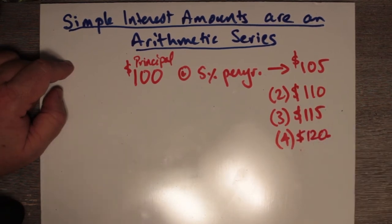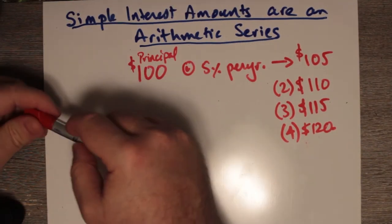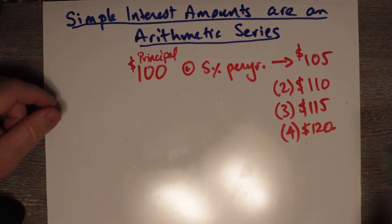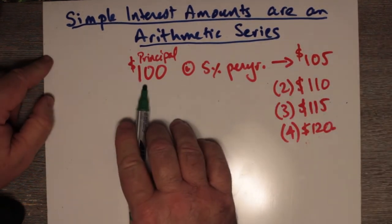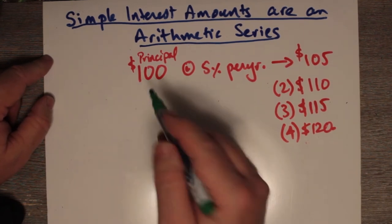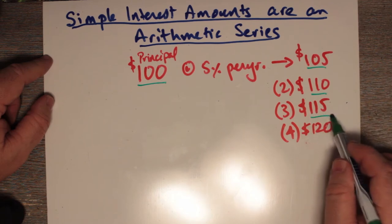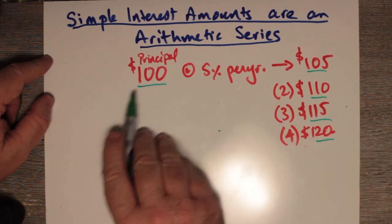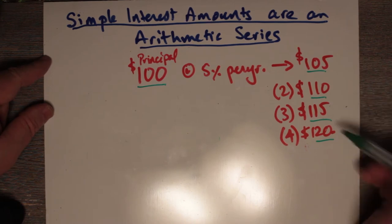This comes from the idea that, as you can see here, with simple interest, every new amount is always $5 more than the previous amount. We started with $100, then we went to $105, then $110, $115, $120.